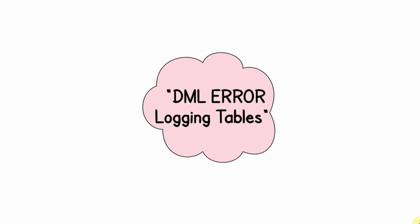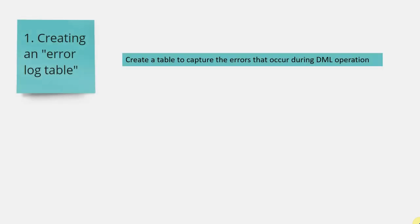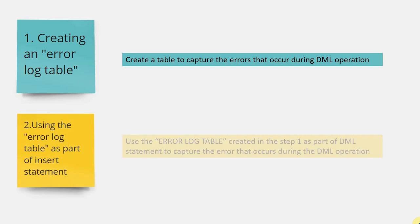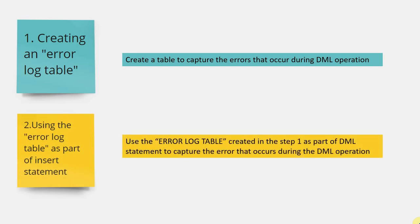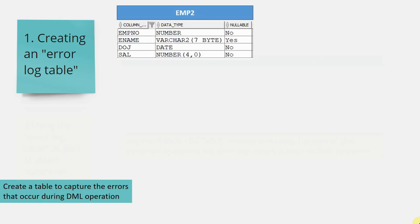Using a DML Error Logging Table is very simple — you just need to follow two steps. The first step is to create a table to hold the errors. The second step is to use that table in your DML statement to capture errors. For every target table you are inserting into, you need to create one corresponding error log table. In my case, Employee2 is the target table, so I'm going to create an error log table for Employee2.